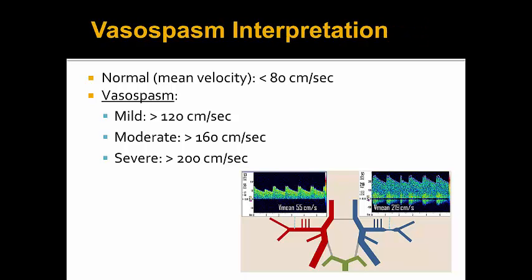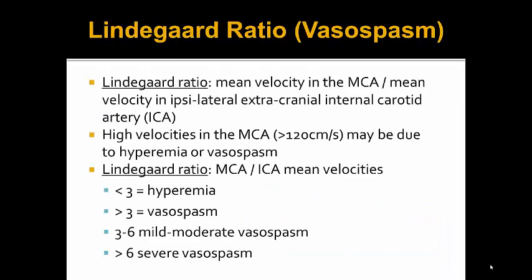When categorizing vasospasm: mild vasospasm is greater than 120 centimeters per second, moderate is greater than 160, and severe vasospasm is greater than 200 centimeters per second. We can also use the Lindegard ratio, which is a ratio of the mean velocity in the MCA compared to the ipsilateral extracranial ICA. High velocities in the MCA greater than 120 centimeters per second might actually be due to hyperemia rather than vasospasm. A Lindegard ratio less than 3 is in keeping with hyperemia, greater than 3 is vasospasm — where 3 to 6 is mild to moderate, and greater than 6 is severe.